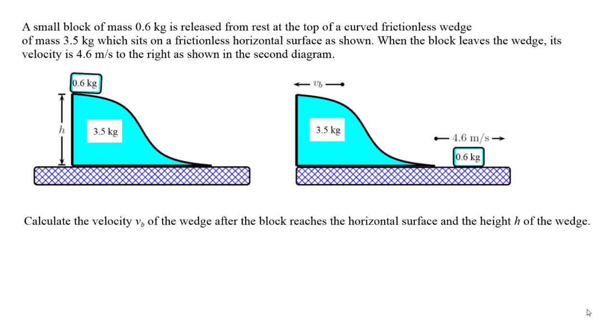First, we're looking for the velocity of the wedge as it moves to the left when the block reaches the bottom of the ramp. We're told that the block has a velocity of 4.6 meters per second to the right as it reaches the bottom of the ramp.